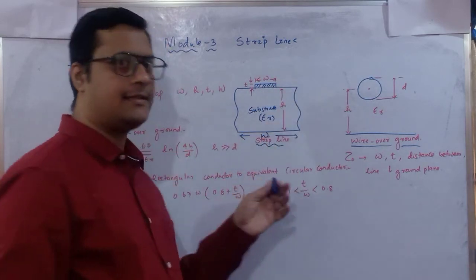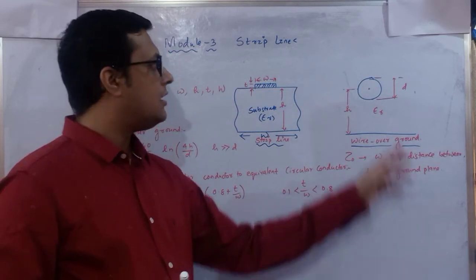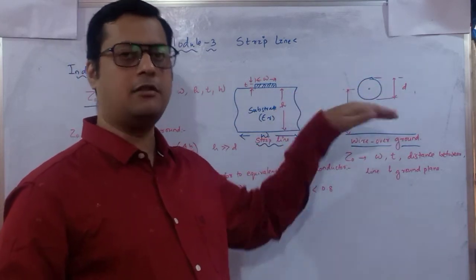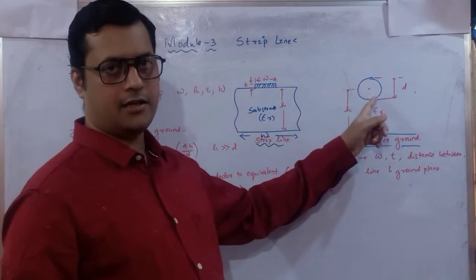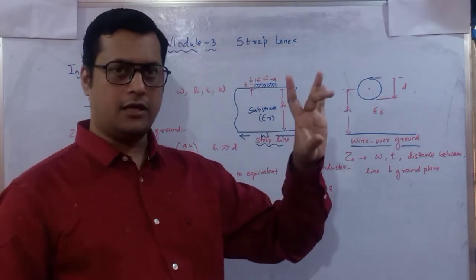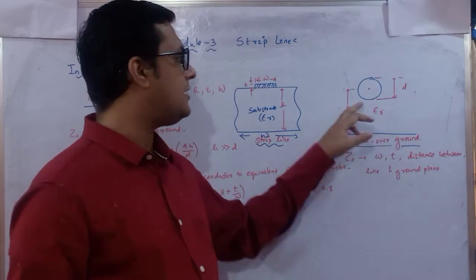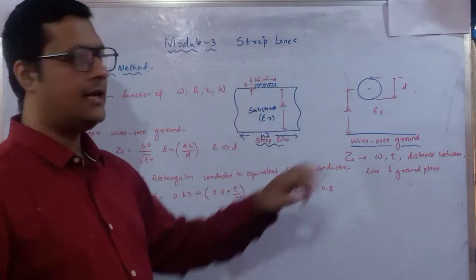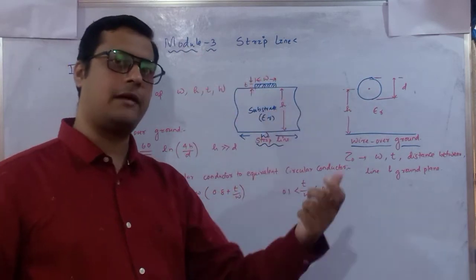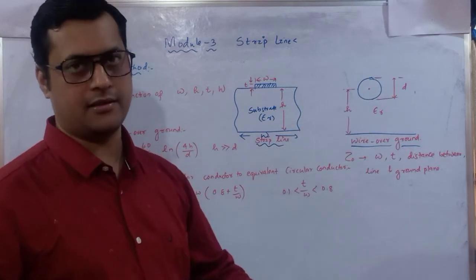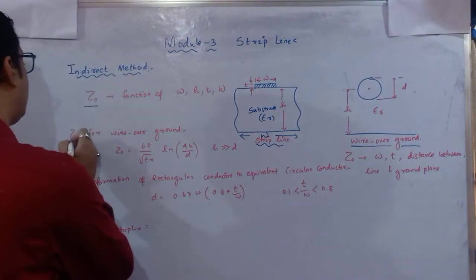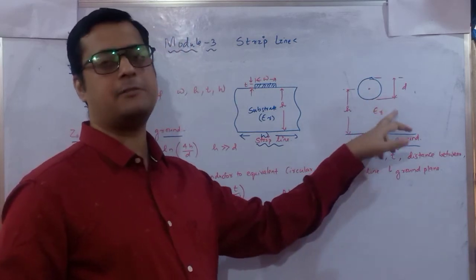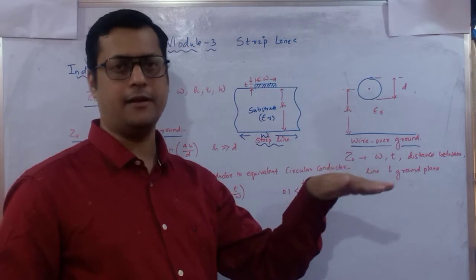The characteristic impedance of this cylindrical line depends on the width of the strip, thickness, height of the substrate, and width of the device. Similarly, the cylindrical line depends on the diameter d, height h, and dielectric medium ε_r. The difference is that the metallic plate has its own rectangular dimension while the cylindrical wire has diameter d — we need to convert between these.